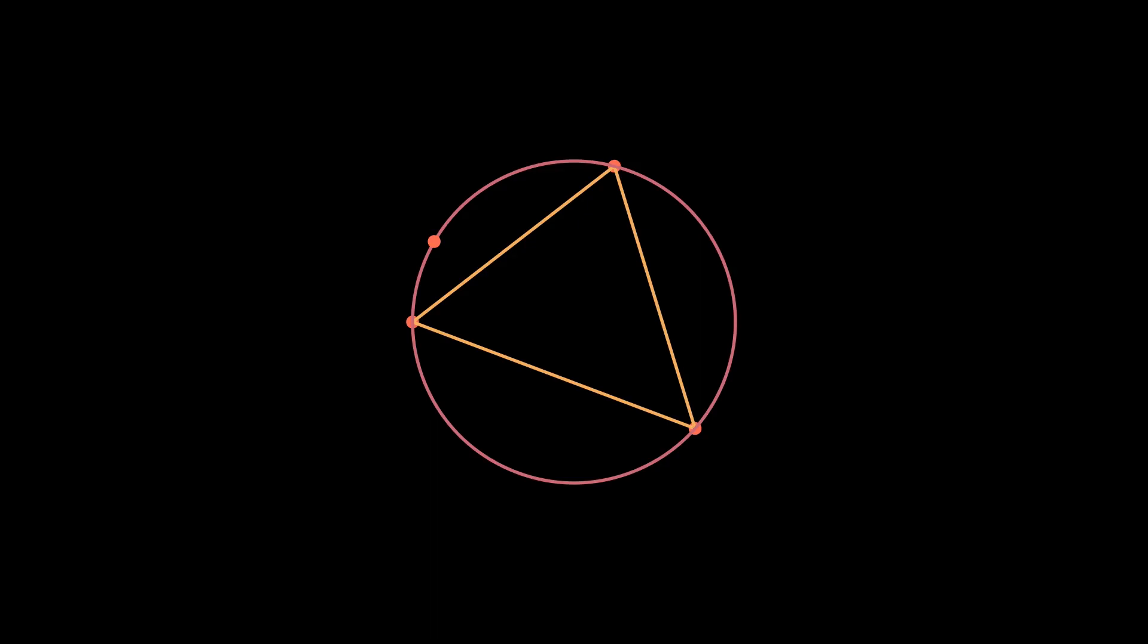These figures are called cyclic. The answer is straightforward and so are its proofs, which I'll put in the description. A quadrilateral is cyclic if and only if the sum of opposite interior angles is 180 degrees. Keep this in mind.